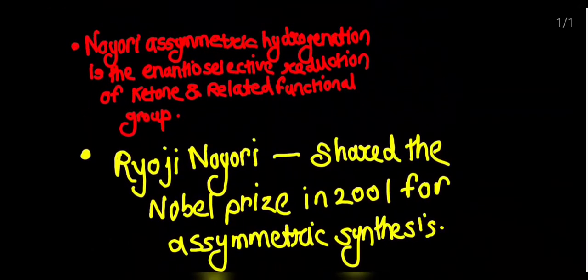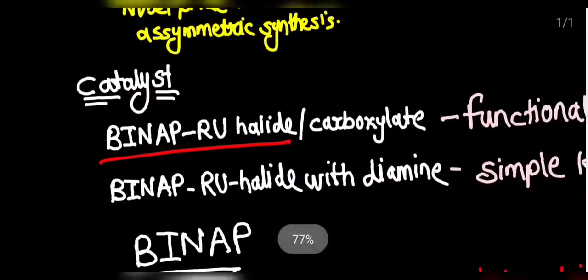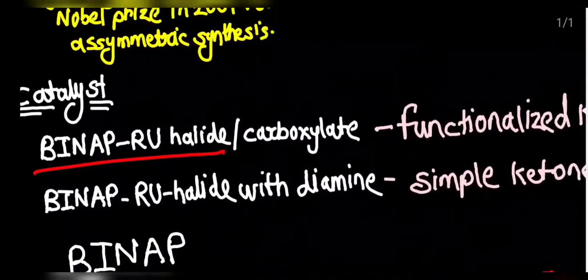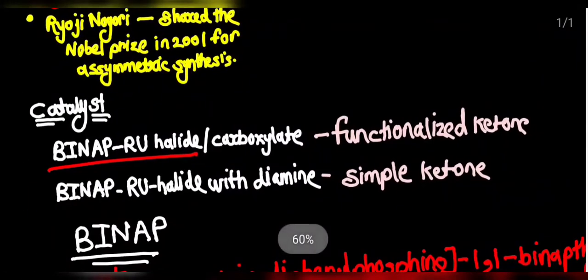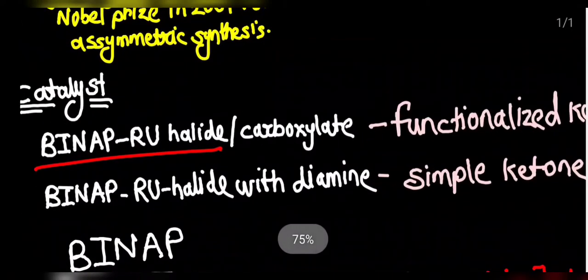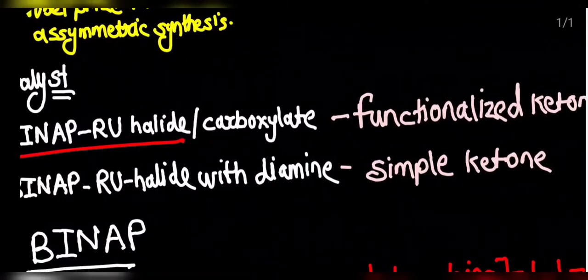The Noyori Asymmetric Hydrogenation involves a catalyst. Which catalyst is involved in this name reaction? It is BINAP ruthenium halide or carboxylate, which is used for the hydrogenation of the functionalized ketone. Another one is BINAP ruthenium halide with a diamine and some sort of base, which is used for the hydrogenation of the simple ketone.